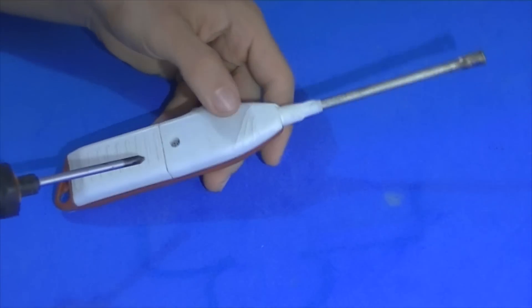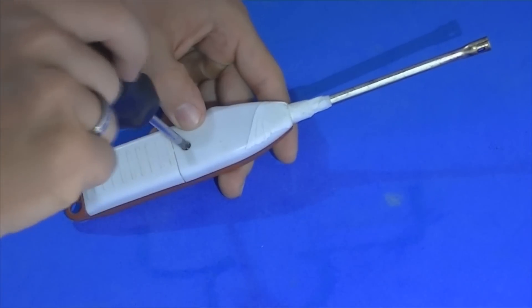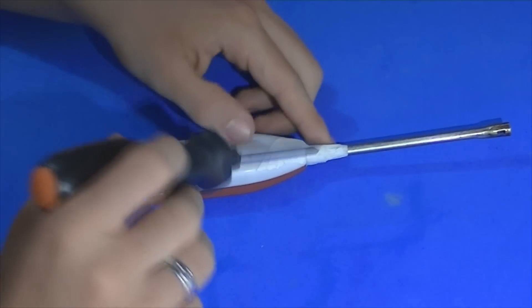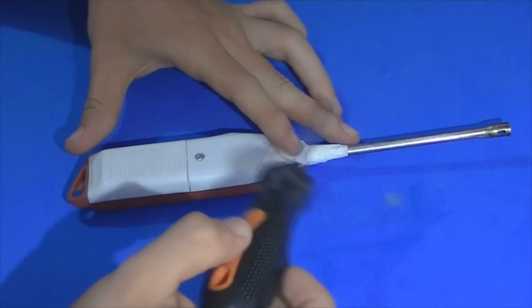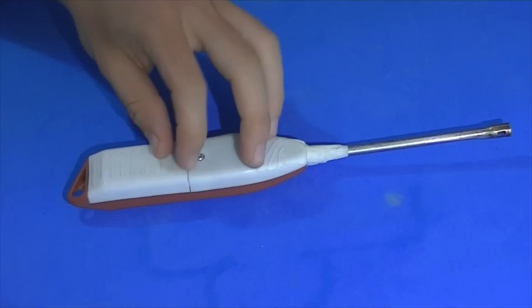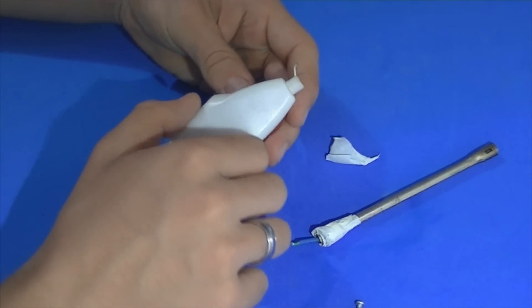Agora vamos abrir nosso acendedor elétrico. Você pode observar que tem um parafuso bem aqui no meio. É o único parafuso que precisamos retirar para podermos abrir o acendedor. Você pode observar que este aqui já está bem velho, remendado com fita. O importante é que esteja pegando a faísca dele. Olha. Acabou arrebentando aqui, mas eu vou abrir.